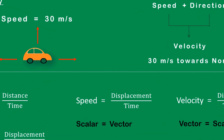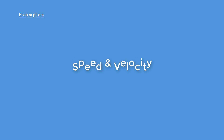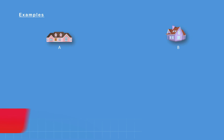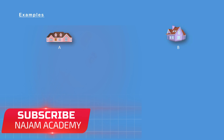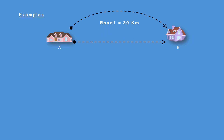The SI unit of speed is meters per second, and the SI unit of velocity is also meters per second in a specific direction. Now let's consider an example. There are two cities, city A and city B, with two roads between them. Road 1 is 30 kilometers and road 2 is 18 kilometers south. Road 1 is clearly a distance, and road 2 is a displacement.